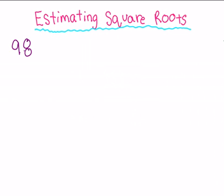To start, you find the perfect square below and above 98. The perfect square below is 81 and above is 100.